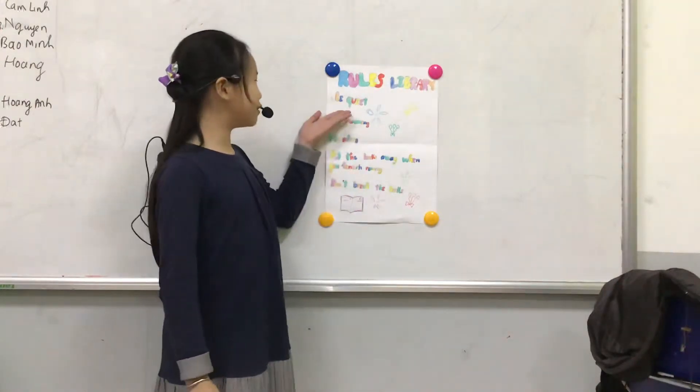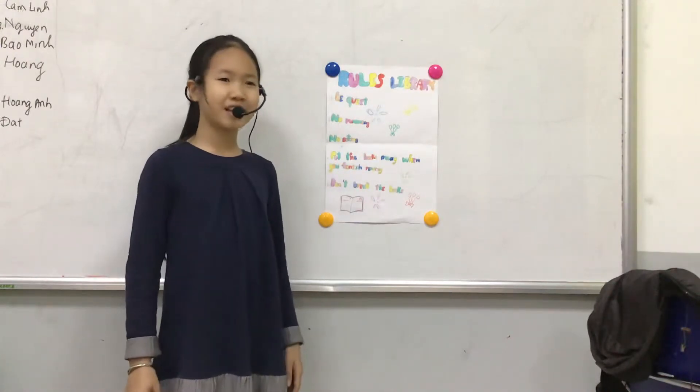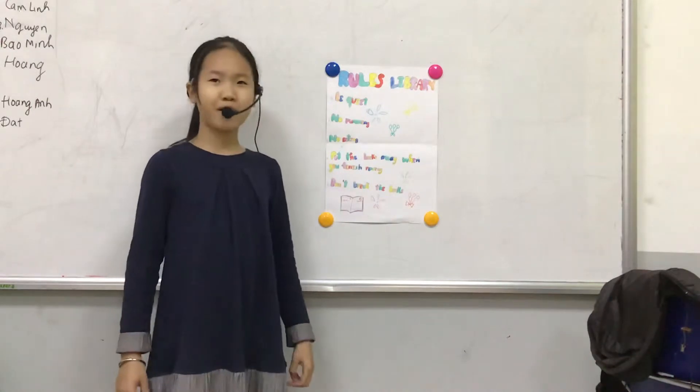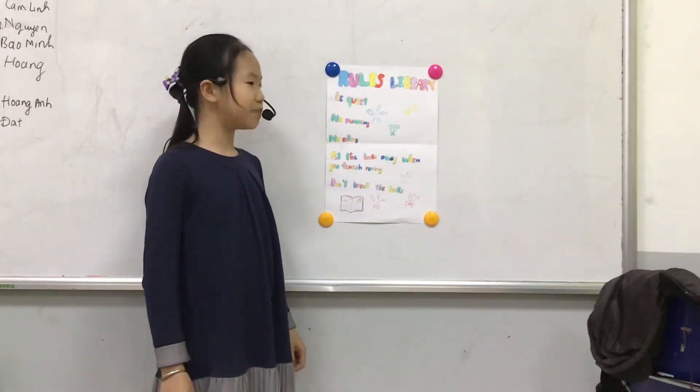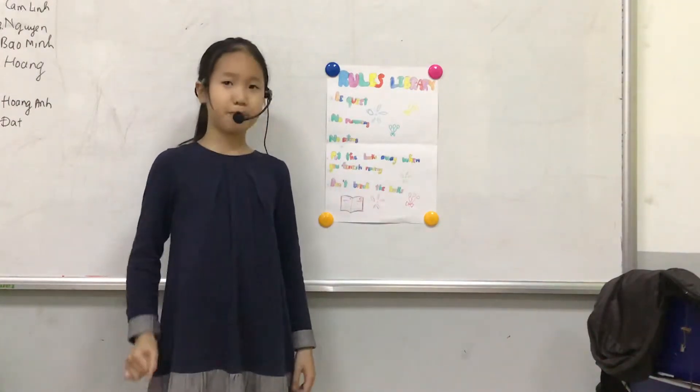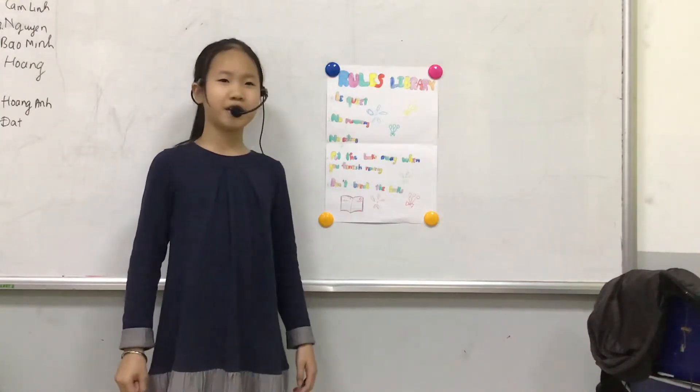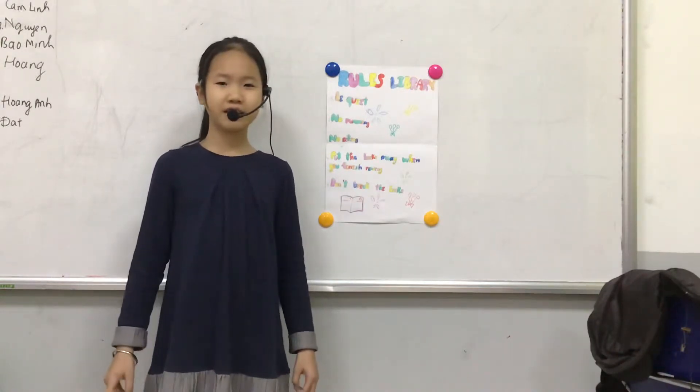The first rule is be quiet. I usually see this rule in some classrooms. Why do we have to be quiet? We have to be quiet so some people in the classroom can learn. If we break this rule, maybe the teacher will warn us and we have to go out of the classroom.